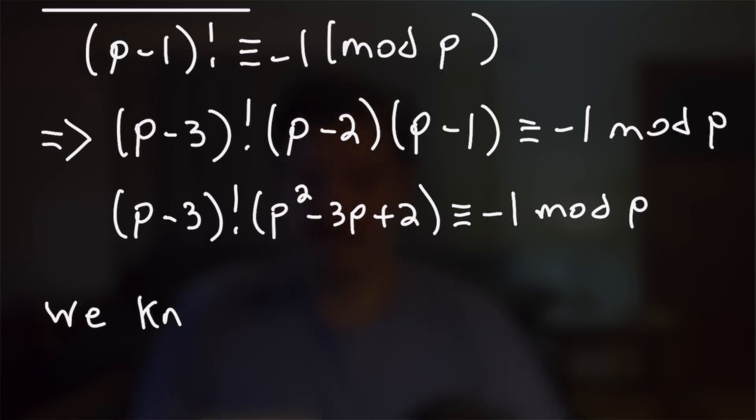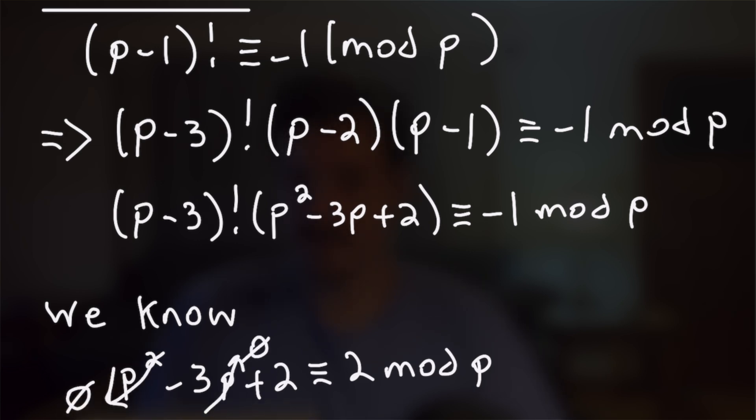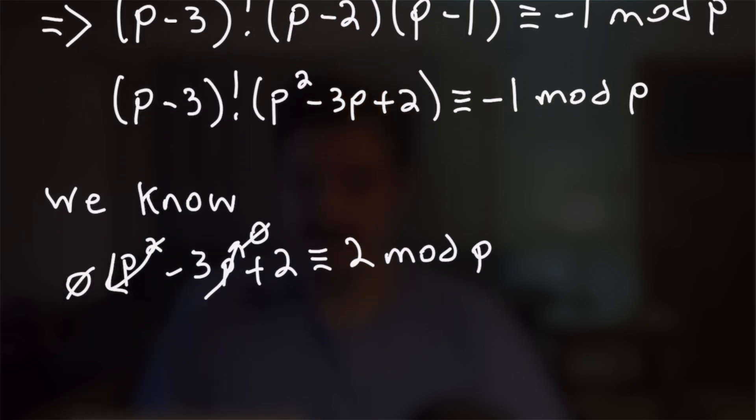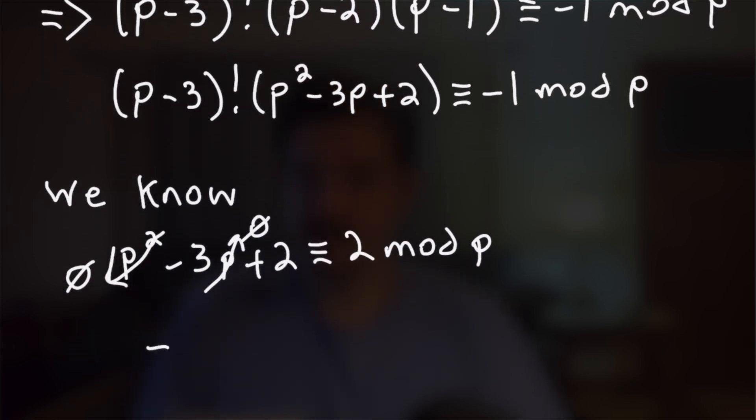Now we can pretty easily see that that polynomial is going to be congruent to 2 mod p as p² mod p is obviously zero and -3p is also zero mod p. So we will have that that whole polynomial there is congruent to 2 mod p, which means we can rewrite it in our original product as 2, which gives us the result that we want. We have that (p-3)! times 2 is congruent to -1 mod p. And with that out of the way, let's get into our third and last example.